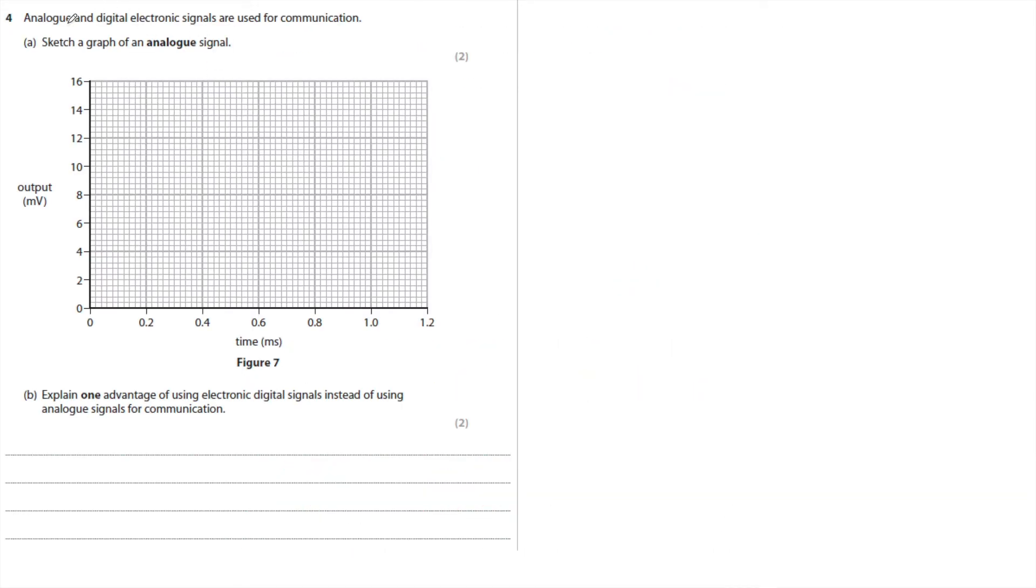Question four says, analog and digital electronic signals are used for communication. Sketch a graph of an analogue signal. Well, of course, an analogue signal has any number of values. It has an infinite number of values. So when you sketch this, make sure you don't have any flat parts and make sure you don't go back on yourself, but it can literally be anything you like. So that is my analogue signal.